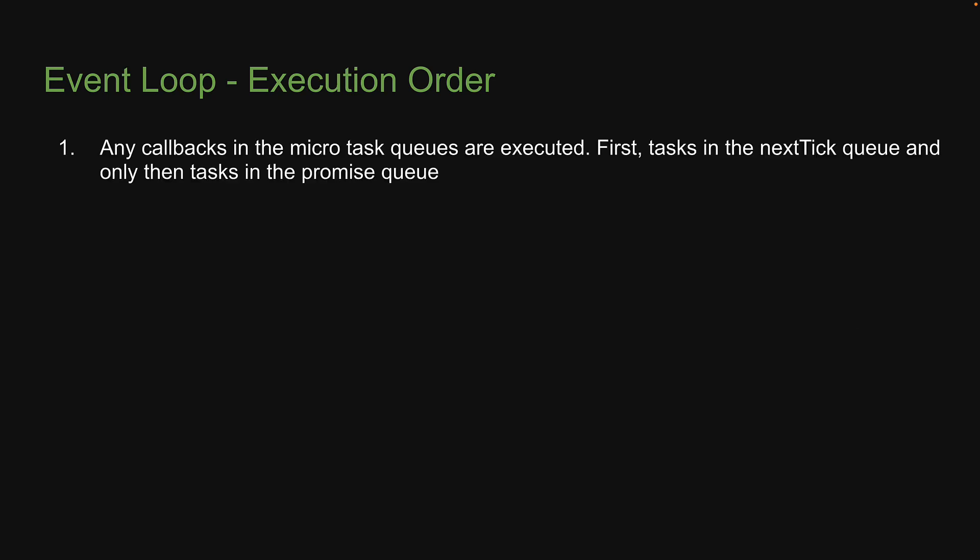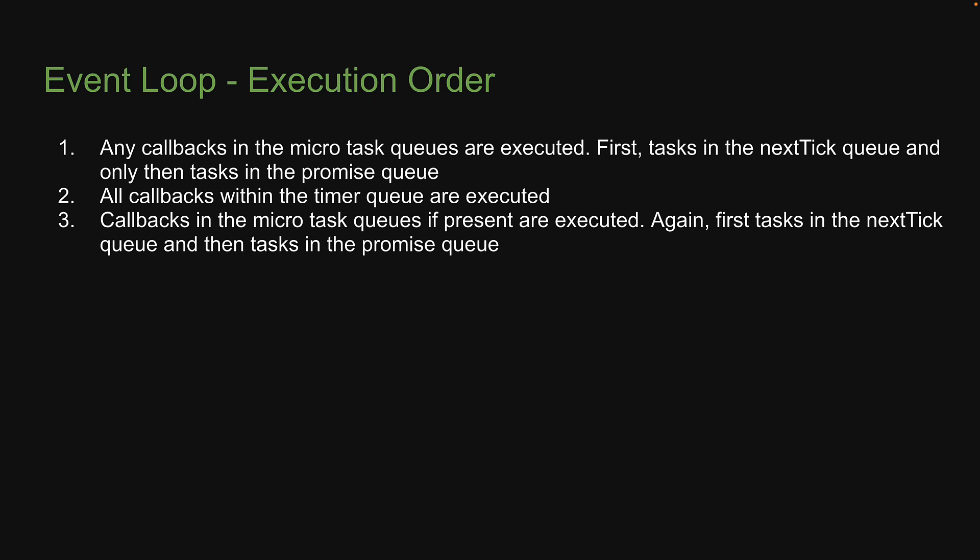Step 1: Any callbacks in the microtask queues are executed — first, tasks in the nextTick queue, and only then tasks in the promise queue. Step 2: All callbacks within the timer queue are executed. Step 3: Callbacks in the microtask queues, if present, are executed after the execution of every callback in the timer queue — again, first tasks in the nextTick queue, and then tasks in the promise queue.